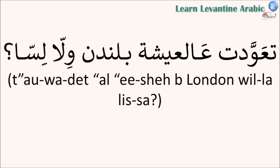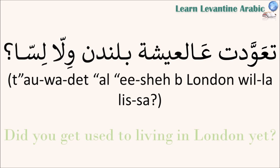Here's an example where we conjugate the verb in the past tense: 'تعودت على عيشة بلندن ولا لسة؟' — Did you get used to living in London or not yet? It means: have you adapted, are you used to things there? Notice that after the verb 'تعودت' we have 'ع'. So after the verb 'تعود', if we have a noun, we add 'ع' or 'على' — for example: 'تعودت على عيشة'.